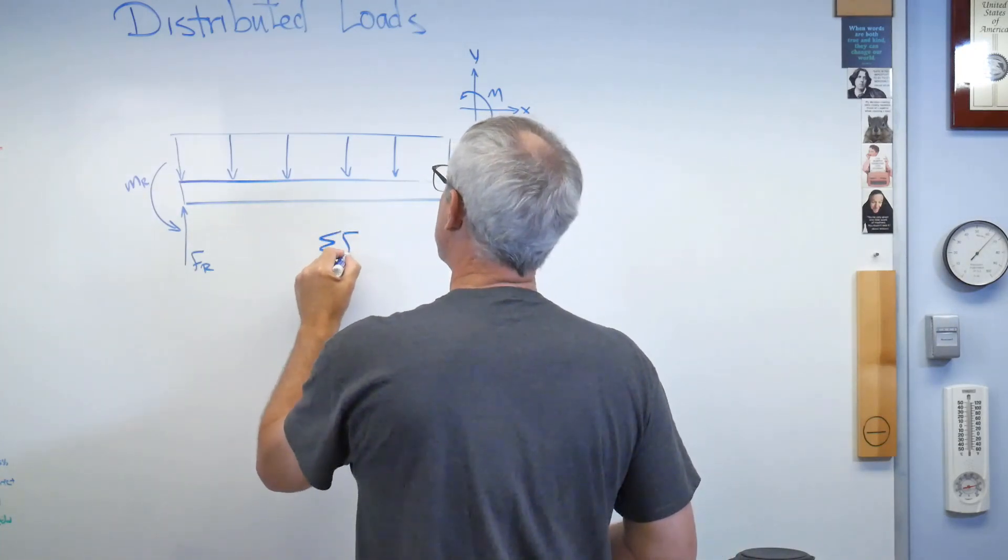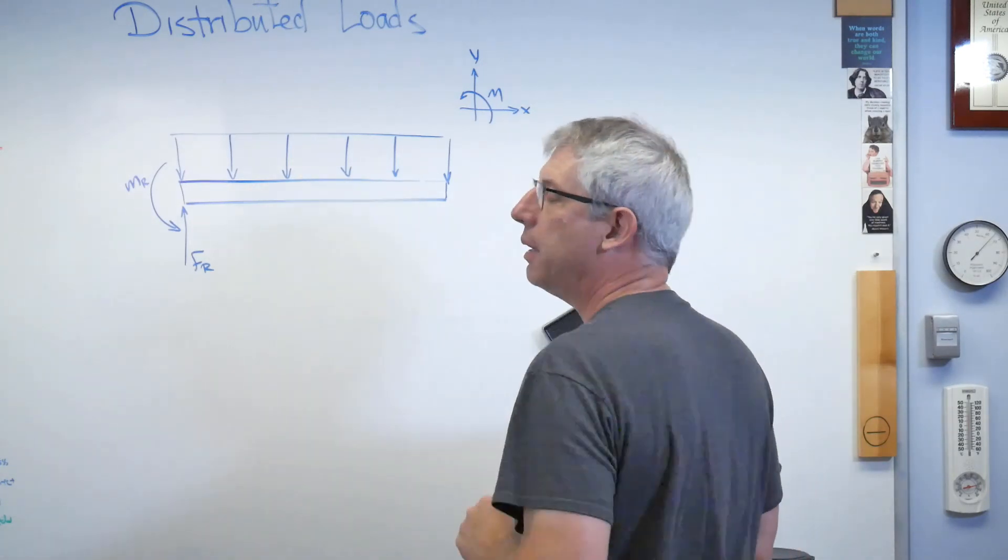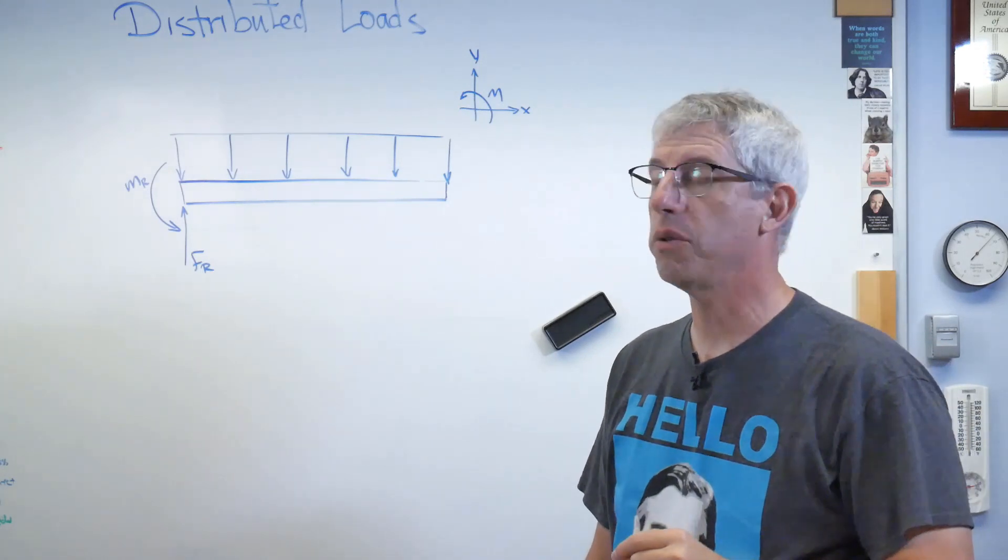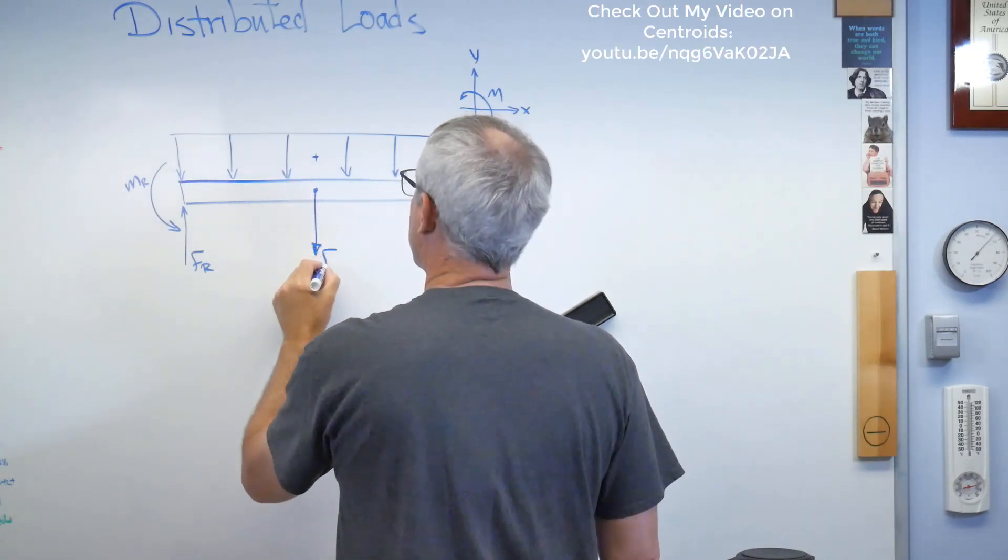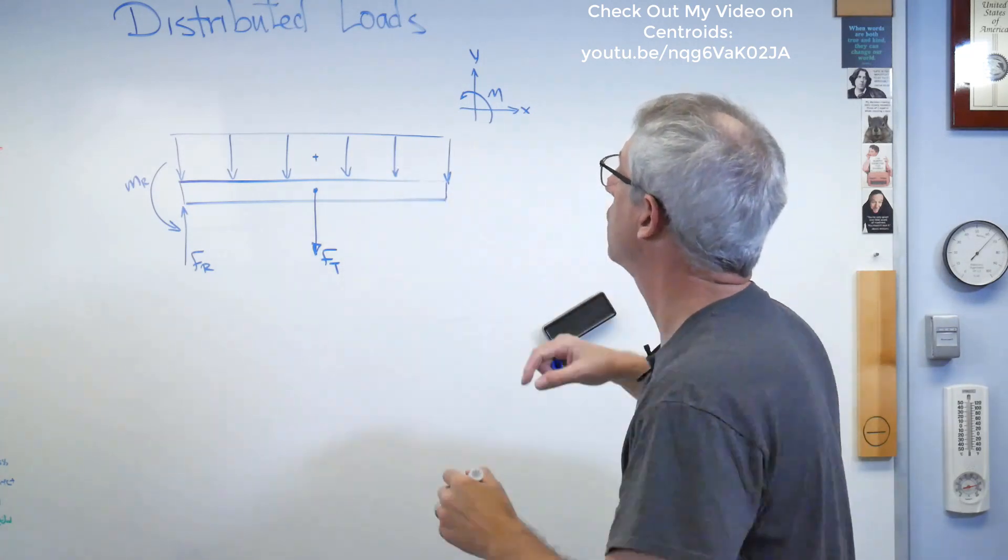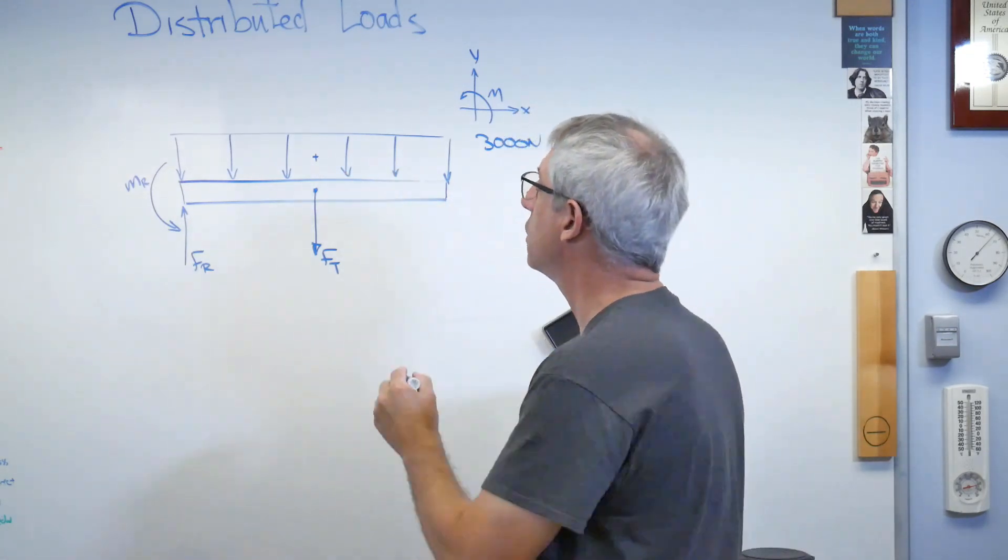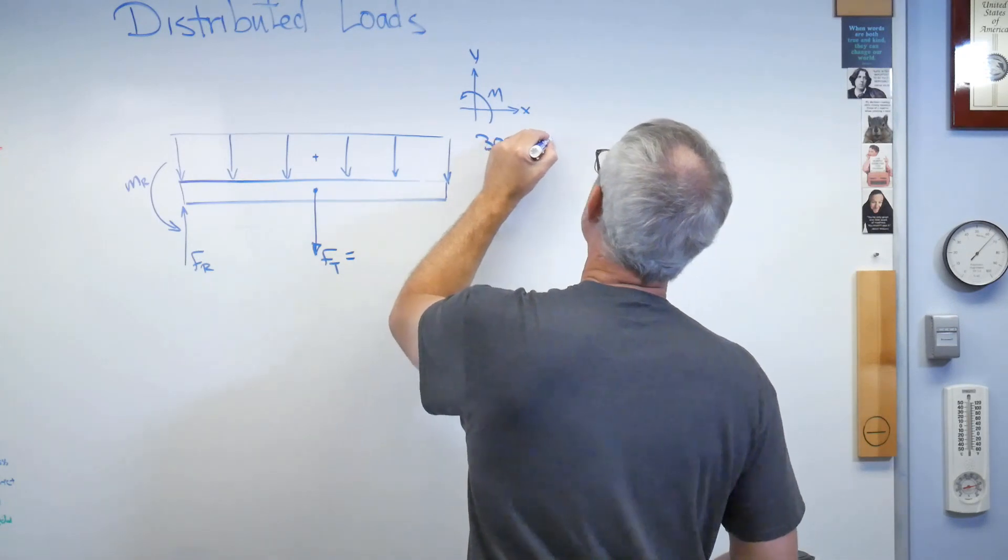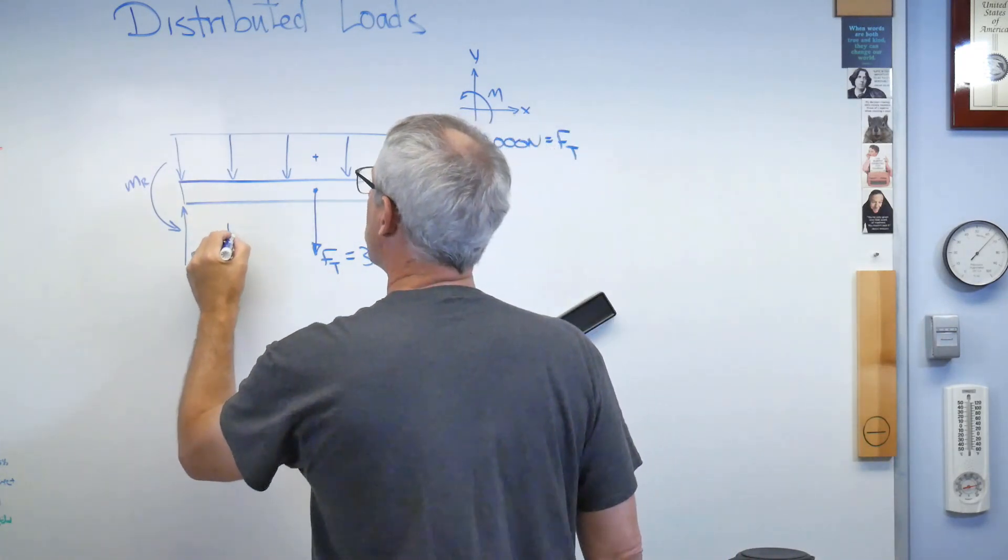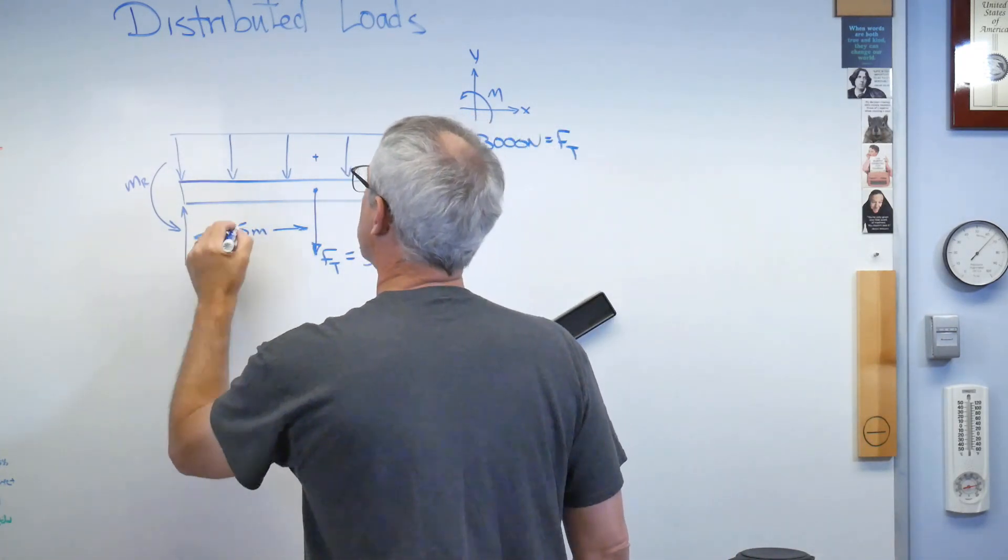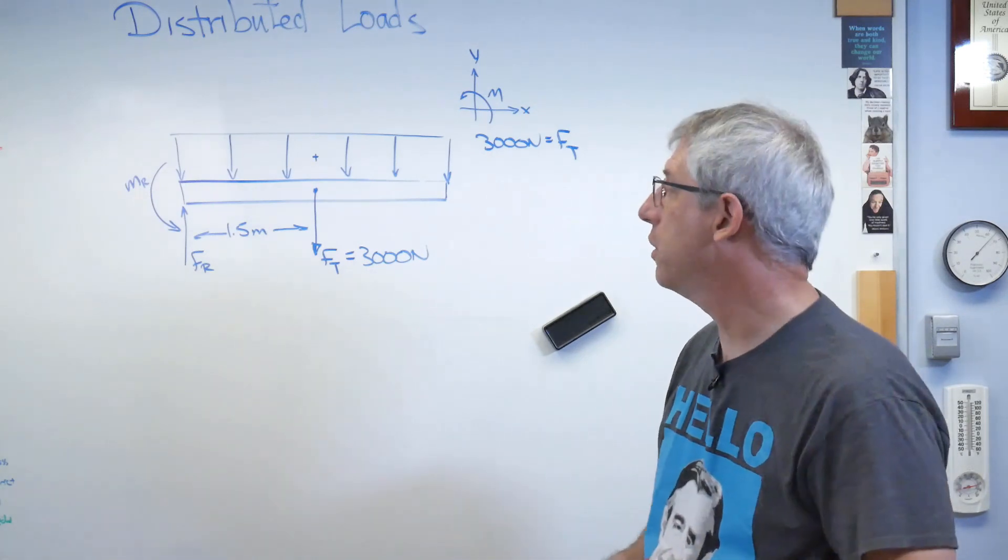Next thing, let's sum the forces in the y direction. I already told you, it's going to be easiest to replace that with a concentrated force. So the centroid of a rectangle is right in the center. There's my total force due to that. This was 3,000 newtons, because we had 1,000 newton per meter over 3 meters. And that makes this distance 1.5 meters, since the concentrated force acts at the center of the beam, and the beam is 3 meters long.